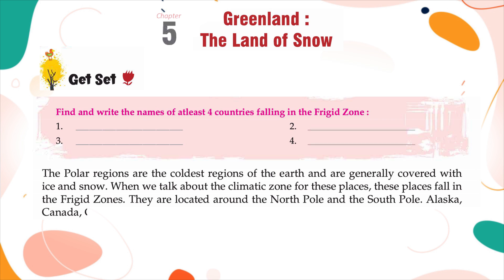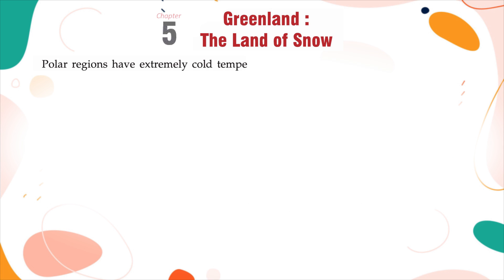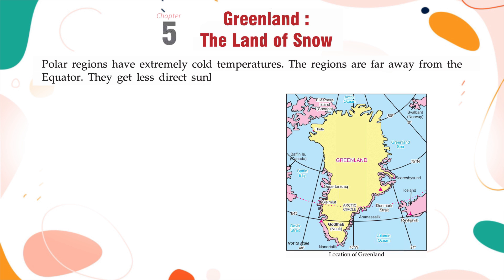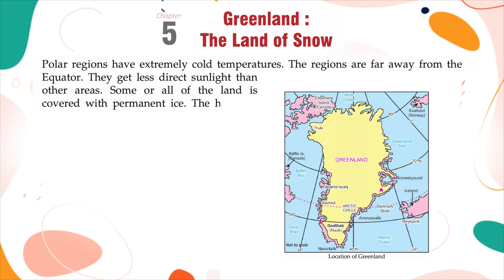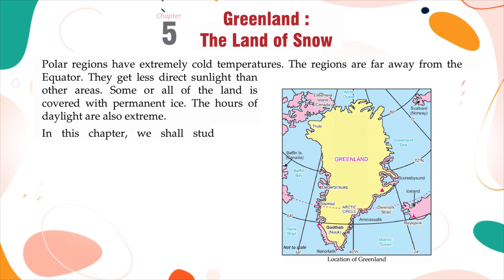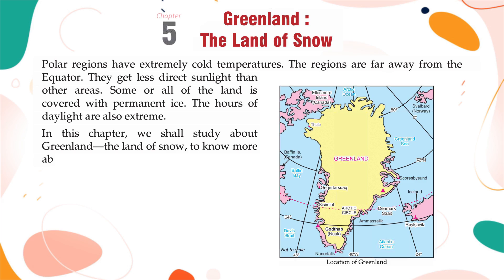Alaska, Canada, Greenland, Norway, and Russia are in the Arctic Northern Region. Antarctica is the Southern Region. Polar regions have extremely cold temperatures. The regions are far away from the equator and get less direct sunlight than other areas. Some or all of the land is covered with permanent ice, and the hours of daylight are also extreme. In this chapter, we shall study about Greenland, the land of snow, to know more about the frigid zone.